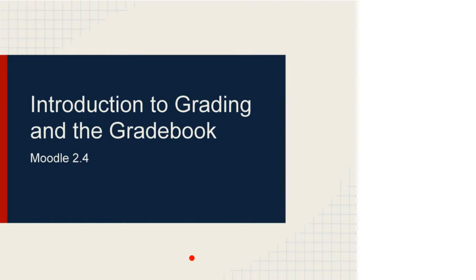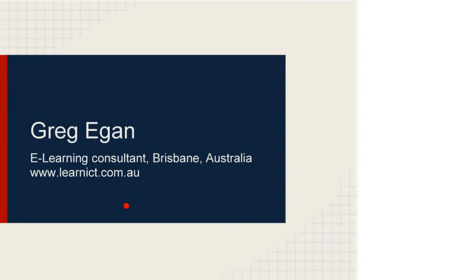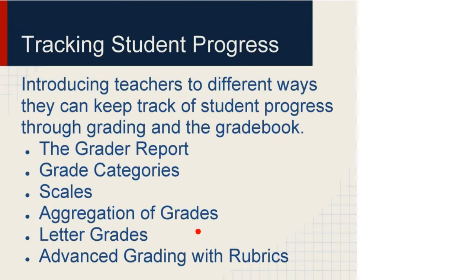Let's get started. I'll move on to the next slide — that's just introducing myself, Greg Egan. I've worked as an e-learning consultant in Brisbane, mostly with high schools, sometimes with training colleges. This is what I've planned for this session: tracking student progress. I'm looking to introduce people to different ways they can keep track of student progress through grading in the gradebook. First, the grader report — the main part of the gradebook you'll see when you go into grades. Secondly, grade categories, so we can categorise grades. For example, you might want to track how well students do on quizzes versus assignments, or categorise things into sections of the course.